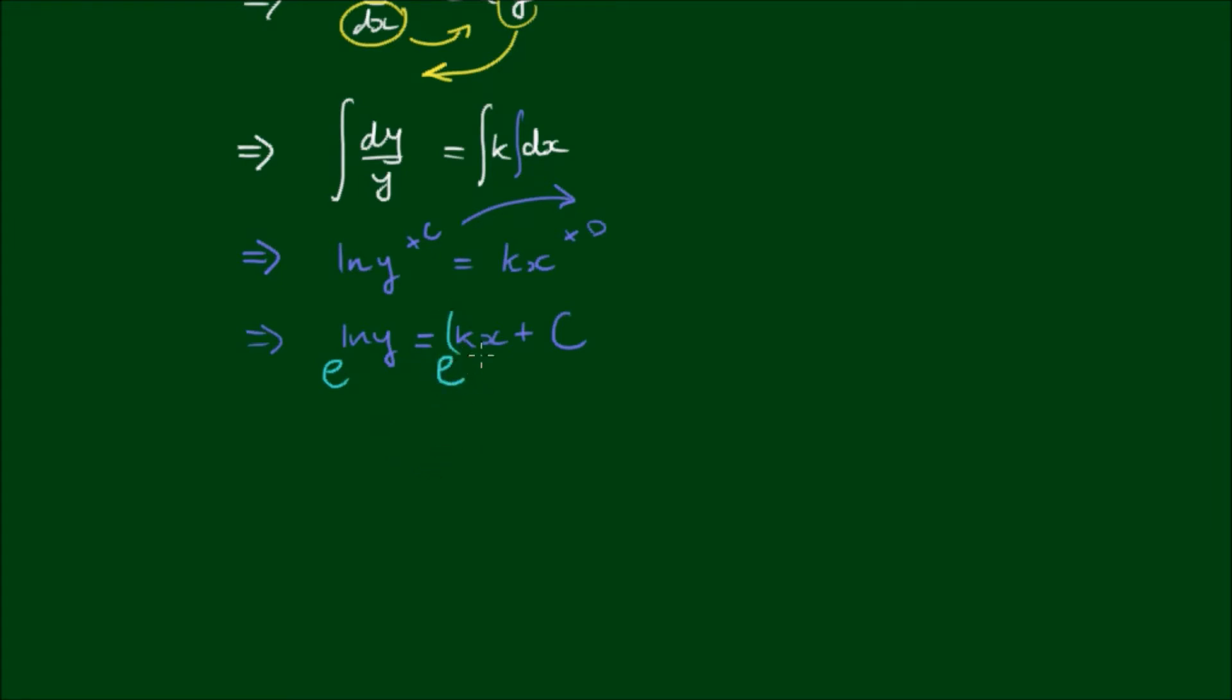So I have e raised to the kx plus c. Now the e and the log are opposite functions so they cancel and I'm left with y equals